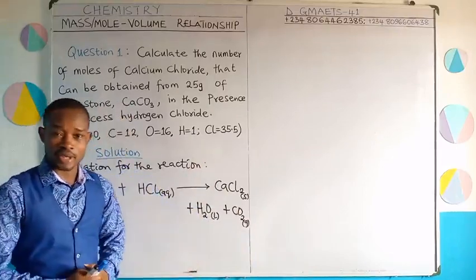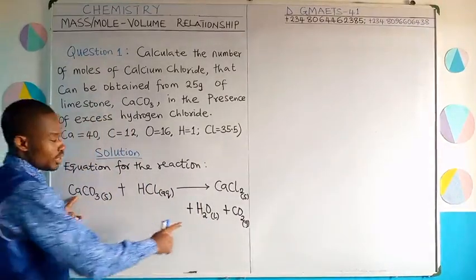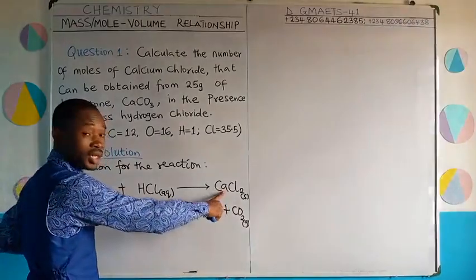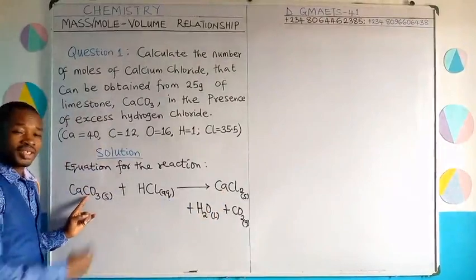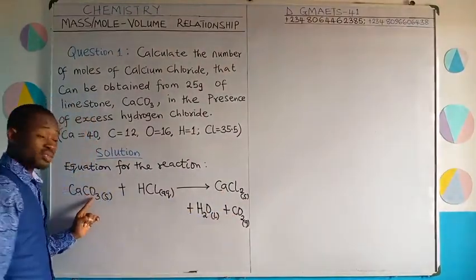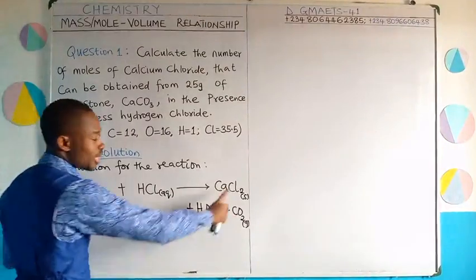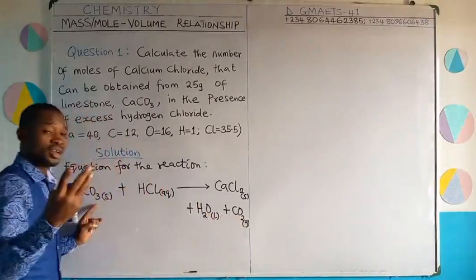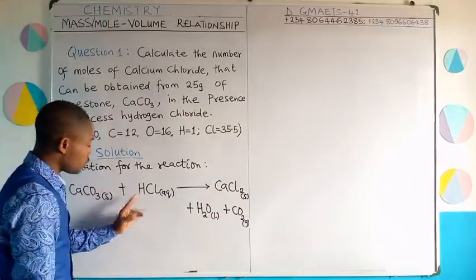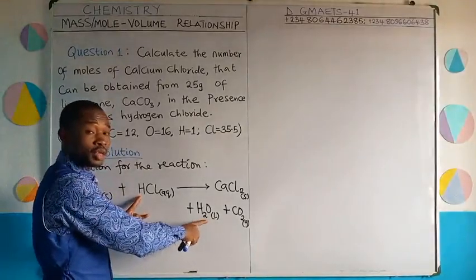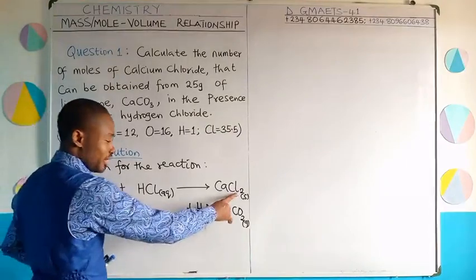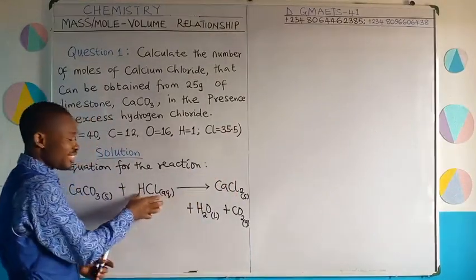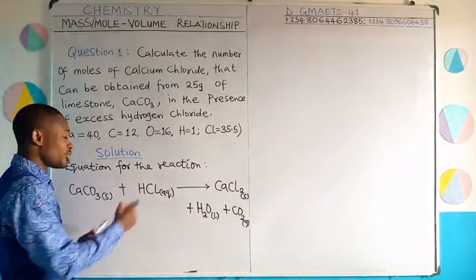Now let us check if the equation is balanced. Calcium: 1 on reactant side, 1 on product side — balanced. Carbon: 1 on reactant, 1 on product — balanced. Oxygen: 3 on reactant side; in the product, 1 from water plus 2 from CO₂ gives 3 — balanced. Hydrogen: 1 on reactant side but 2 on product side — not balanced. Chlorine: 2 in the product but 1 in the reactant — not balanced. So we need to put a coefficient of 2 in front of HCl.